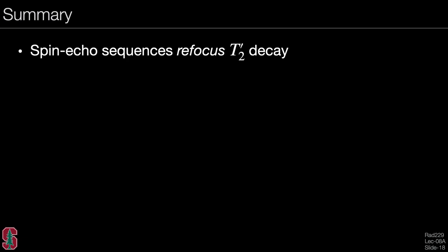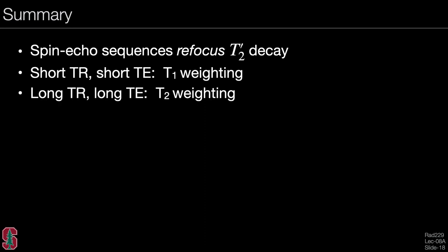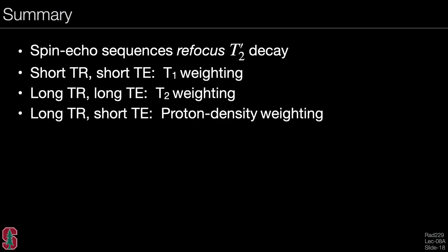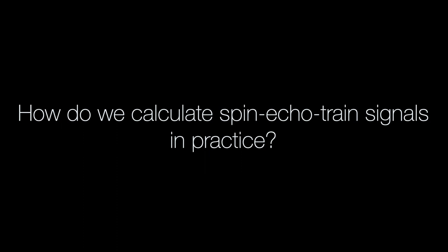To summarize this lecture: spin echo sequences refocus the T2 prime decay. A short repetition time and short echo time gives T1 weighting; a long TR and long TE gives T2 weighting; a long TR and short TE gives proton density weighting. We often interleave multiple slices, but for T1 weighted imaging you may not fit all slices in one TR and may need a second acquisition. The next lecture addresses how to calculate spin echo chain signals in practice.